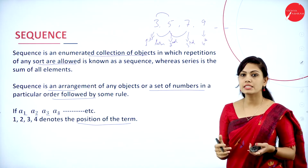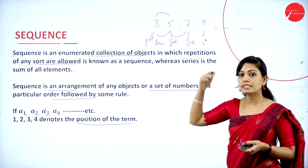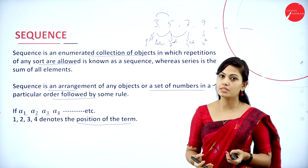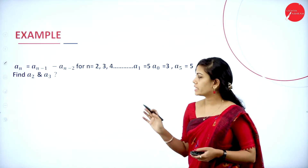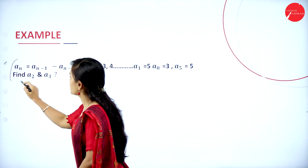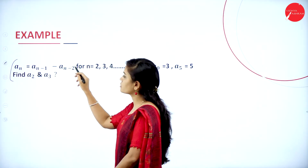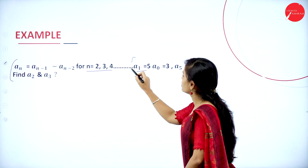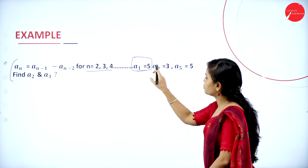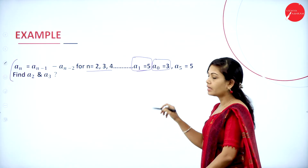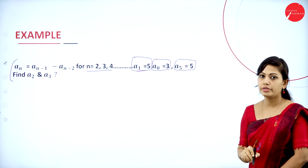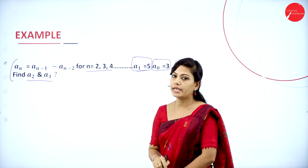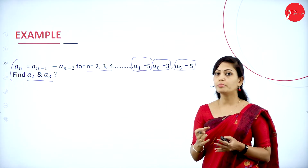A sequence can be odd numbers, ascending order, descending order, natural numbers, etc. That is called as sequence. Here is the first example problem: an = an-1 minus an-2, for n = 2, 3, 4. Given a1 = 5, a0 = 3, and a5 = 5. This type of question you can expect for 2 marks or 4 marks.